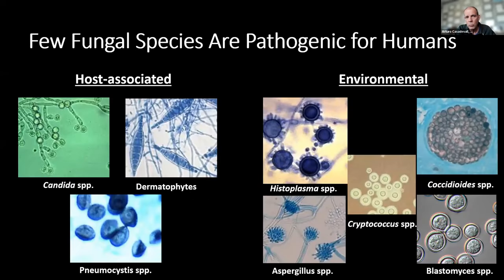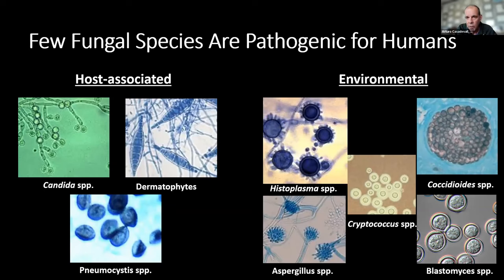We live in a world with relatively few fungal species that are pathogenic for humans. These tend to come from either the host or the environment. From the host we have Candida species, the dermatophytes, and pneumocystis. From the environment we have histoplasma, aspergillus, cryptococcus, coccidioides, and blastomyces. The point is that we have relatively few, and this is because we have a remarkable resistance to fungal disease.